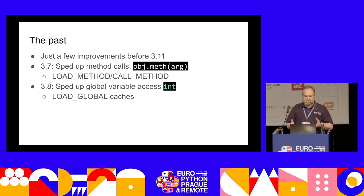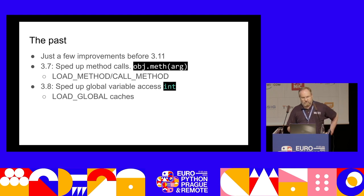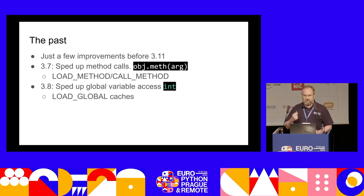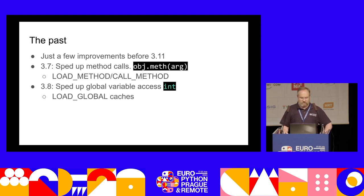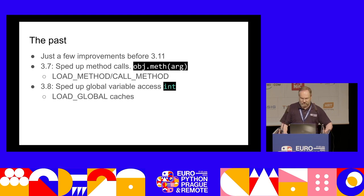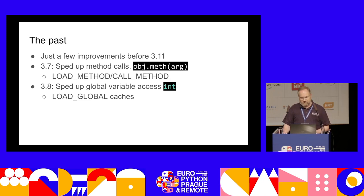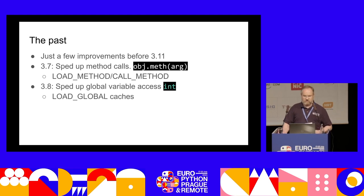Bytecode has been fairly straightforward, just added to as new features were added. In 3.7 we made a small change to improve method calls — a method call like object.meth(arg) is equivalent to binding the method to a temporary variable and calling it. Up until 3.7, we actually created these bound method objects on every method call. In 3.7, we added a LOAD_METHOD / CALL_METHOD instruction pair to avoid creating that temporary object. In 3.8, we added caches for global variable lookups.